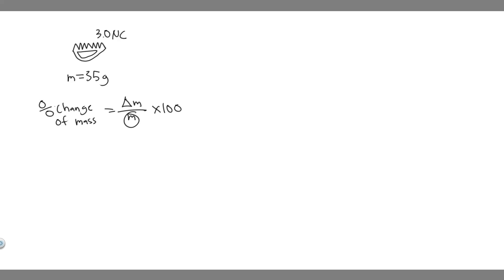We know the initial mass is going to be 35 grams, and there's going to be a change in mass as a result of it gaining this charge, because we know this charge is going to add some mass. So we need to find what this mass being added is — basically, we need to convert 3 microcoulombs into kilograms.